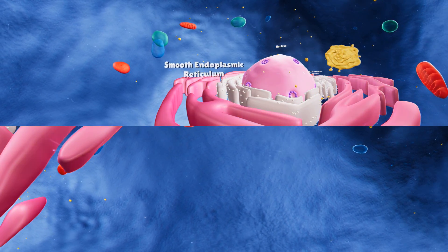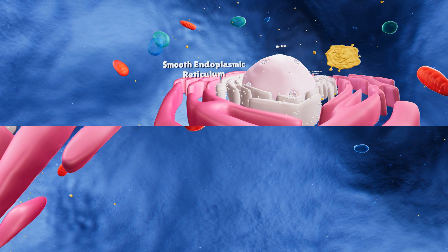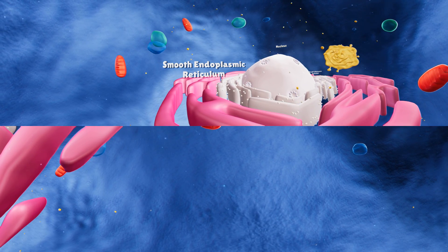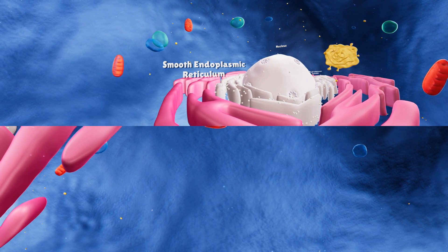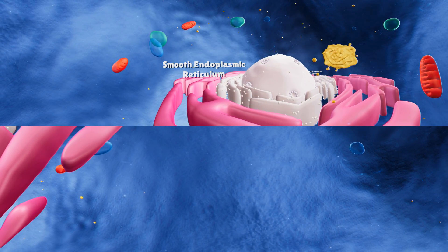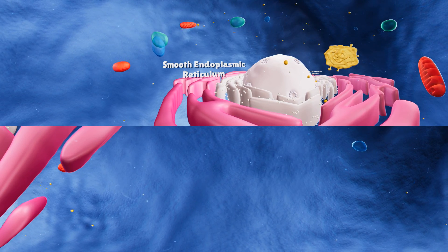The smooth endoplasmic reticulum doesn't have any ribosomes attached to it. It is involved in the synthesis of lipids for the cell. These lipids, along with the proteins made by ribosomes, are used to produce new cellular membrane for the cell.